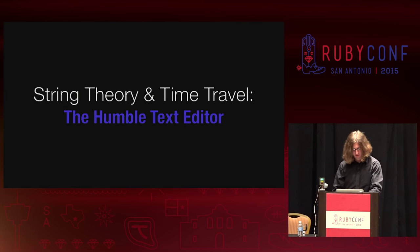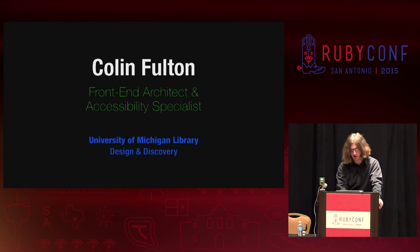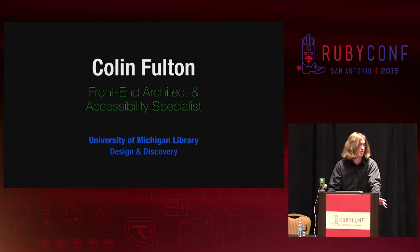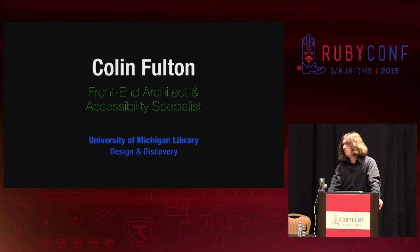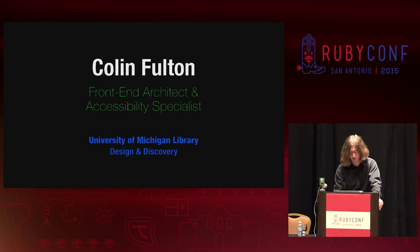Alright everyone, looks like we can go ahead and get started. My name is Colin Fulton, I'm a front end architect and accessibility specialist at the University of Michigan Library. I work on making our websites better for people with disabilities and also better for people, because currently our websites aren't very good if you're a human or if you're a non-human who's really using a computer.